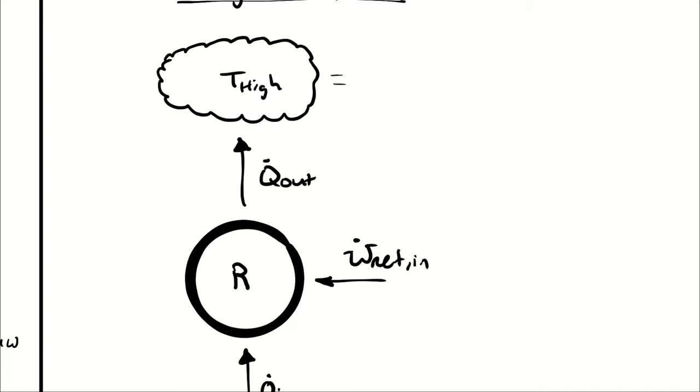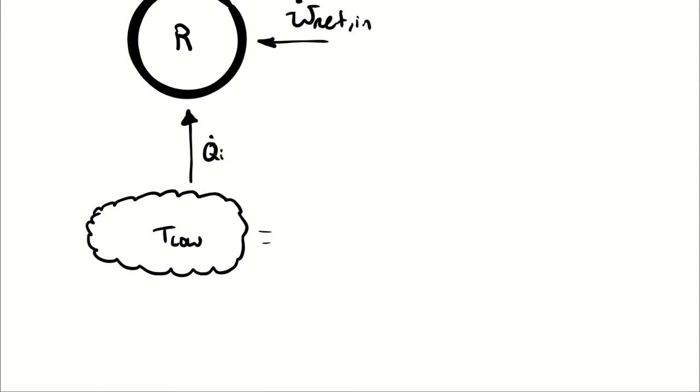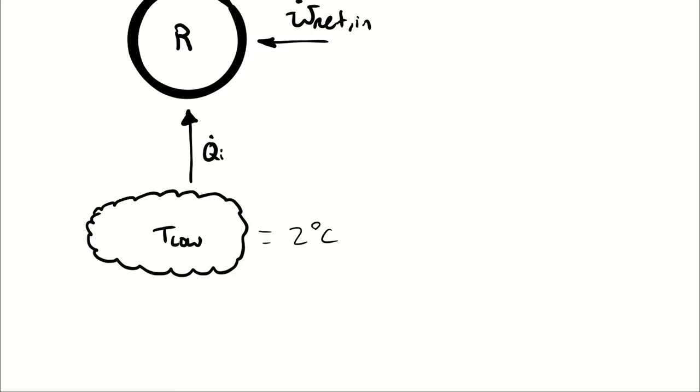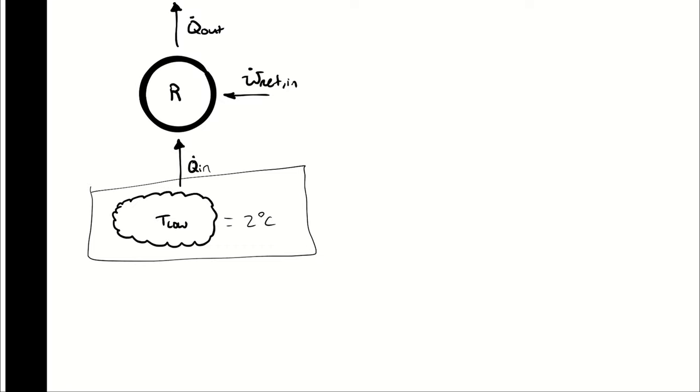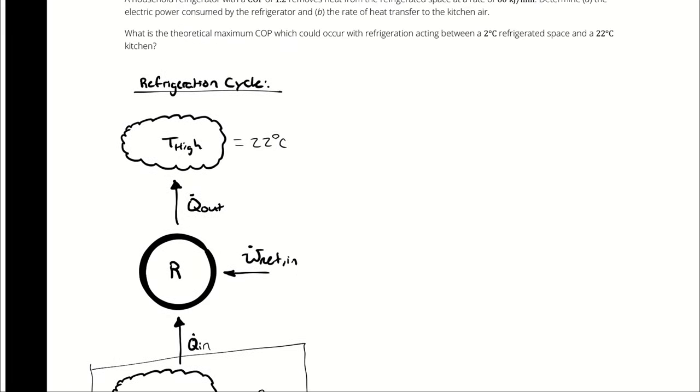I know that the high temperature side, which is the kitchen air, is 22 degrees Celsius, and the inside of the refrigerator is about 2 degrees Celsius. So you can think of the low temperature side as being the refrigerator box itself, and the high temperature side as being the ambient kitchen air. The refrigeration cycle sits on the back of the device and pushes heat from the inside of the refrigerator to the kitchen air.